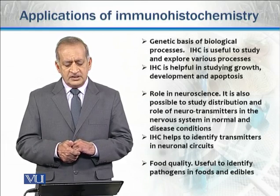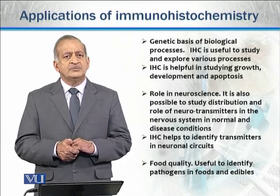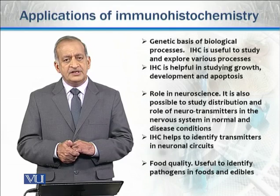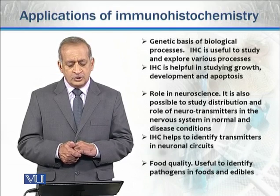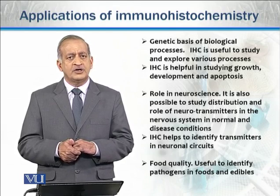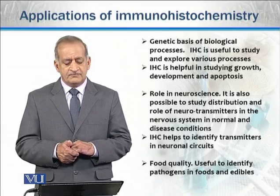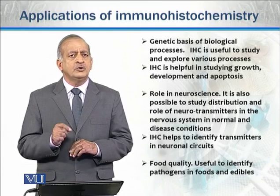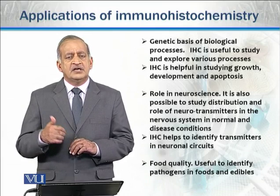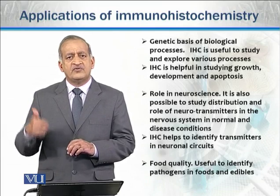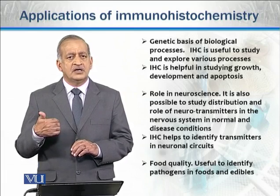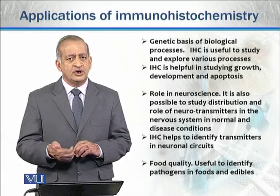Similarly, in neuroscience, Immunohistochemistry helps to study the distribution and role of neurotransmitters which are important in the nervous system under normal and disease conditions. We know that these neurotransmitters transmit messages or nerve impulses from one neuron to the next neuron. And in this way, we are able to perceive and respond to stimuli.